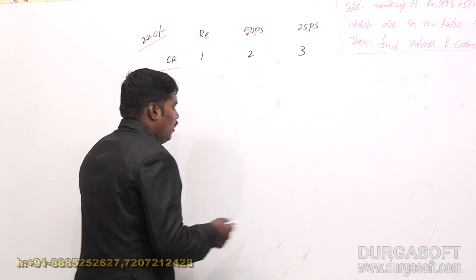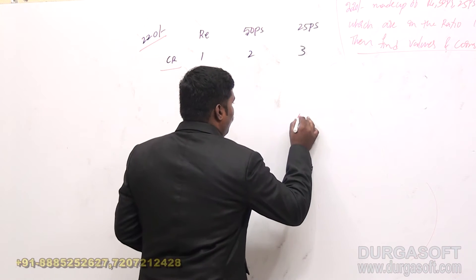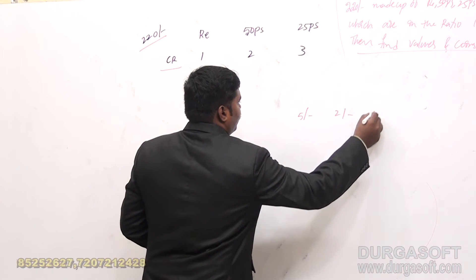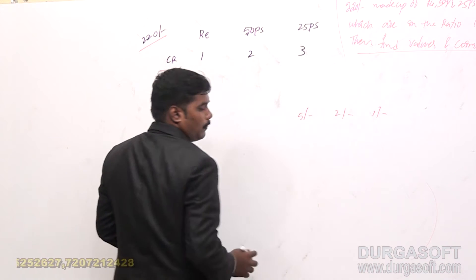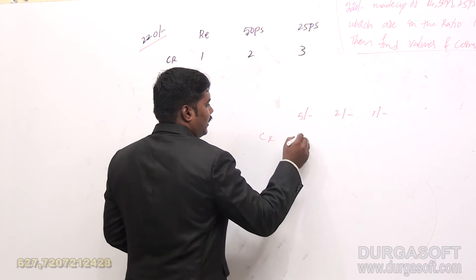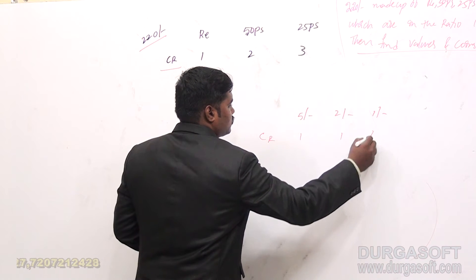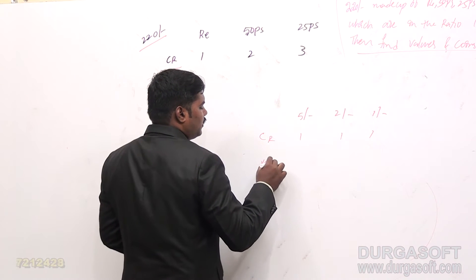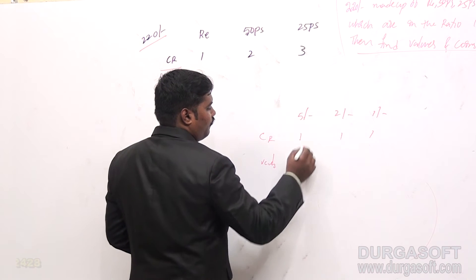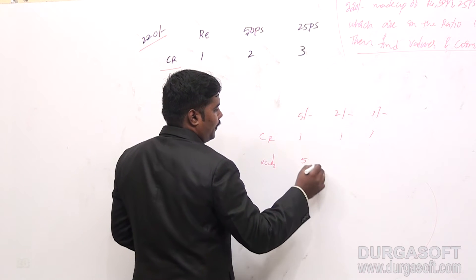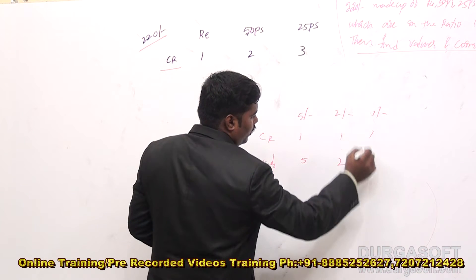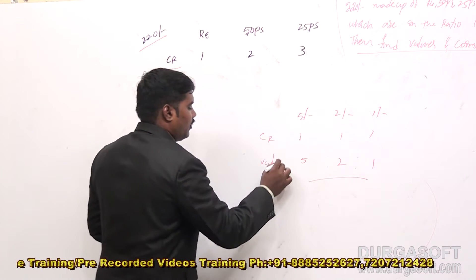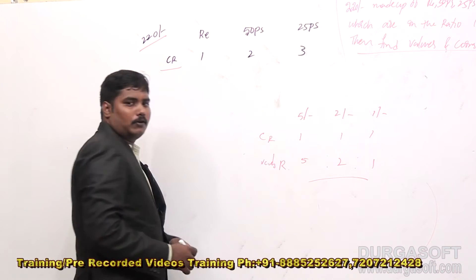For example, if you have a 5-rupee coin, 2-rupee coin, and 1-rupee coin, and coins are in the ratio 1:1:1, then their values are in the ratio: 1 coin of 5 rupees is 5 rupees, 1 coin of 2 rupees is 2 rupees, 1 coin of 1 rupee is 1 rupee. So the coins ratio is different from the value ratio.